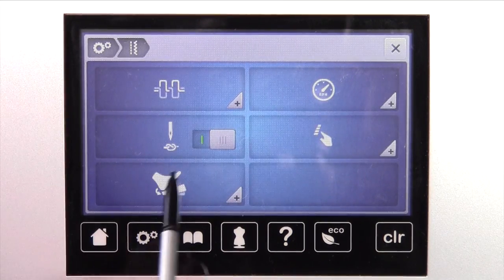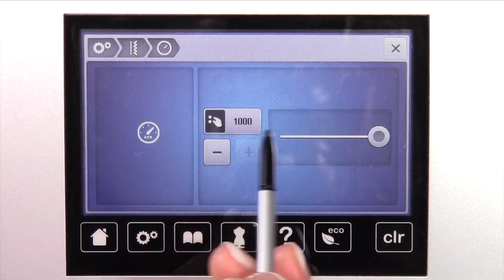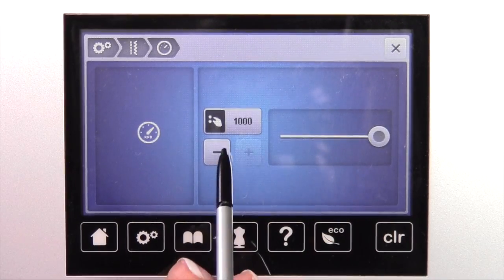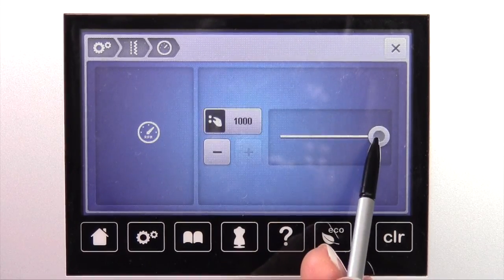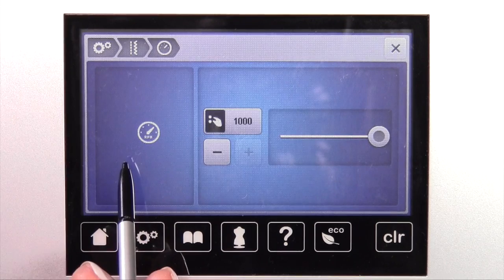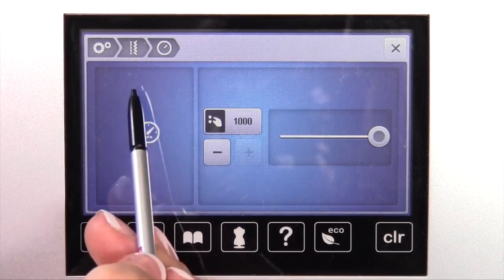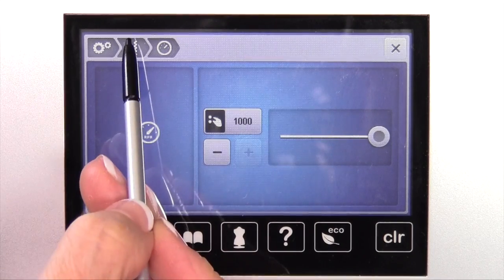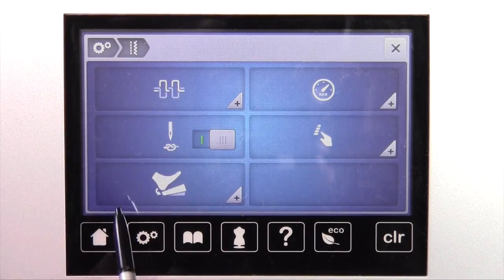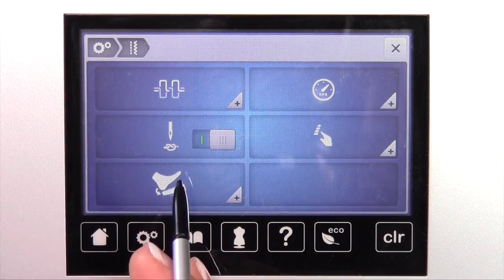We'll back out one level and we'll go over here. This is maximum speed of the machine, a thousand stitches per minute. If you want to just slow that down, of course, anything that we do in here is going to be kept when your machine is turned off. That new setting of reduced speed would also be remembered no matter where the speed control is set on the front of the machine.